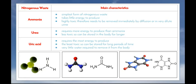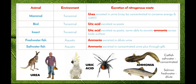Uric acid is the nitrogenous waste that requires the most energy to produce and is the least toxic. Even though it takes a lot of energy to produce, it can be stored for long periods of time and very little water is required to remove it from the body. The next slide looks at the different types of nitrogenous waste and the organisms that excrete them.